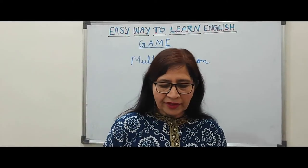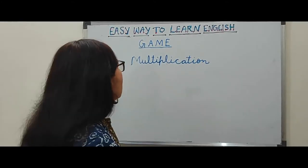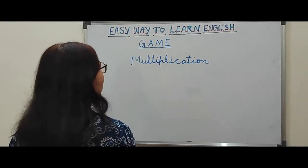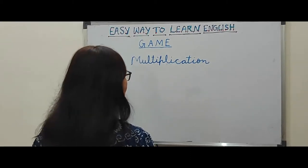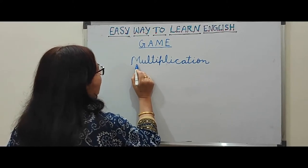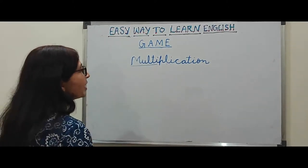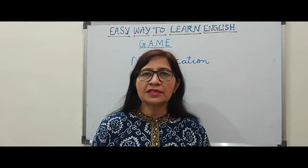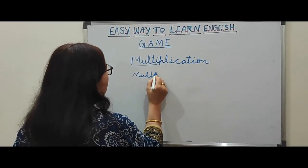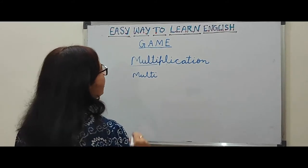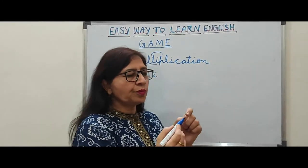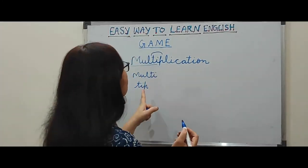Now I have written one more word here: 'multiplication.' We will find out words from it. The first word is 'multi.' Multi means many types — like 'multi-task'; he is a multi-tasker. So one word is 'multi.' And the second word is 'tip.'